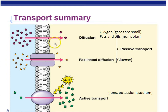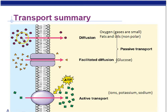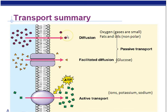Here's a transport summary. The inside of the cell is shown in tan; the blue represents the interstitial fluid close to the bloodstream, showing how we get stuff into the cell. Diffusion does not require energy by the cell. It is a natural process resulting from the kinetic energy of particles randomly moving from concentrated to less concentrated — going down a concentration gradient.